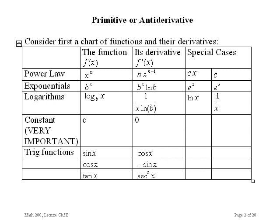To do this, we consider first a chart of functions and their derivatives. For example, if you have x to the n, its derivative is n times x to the n minus 1. For exponentials, b to the x, the derivative is b to the x times the natural log of b. The special case e to the x has derivative e to the x. For logarithms, log base b of x has derivative 1 over x times the log of b, and the natural log of x has derivative 1 over x. Importantly, the derivative of a constant is 0. Then there are derivatives of trig and hyperbolic functions.